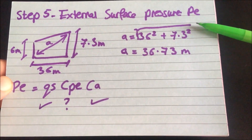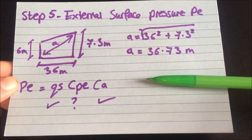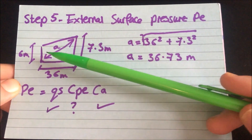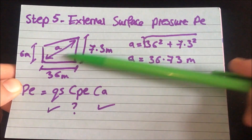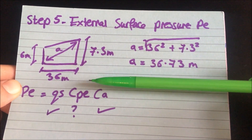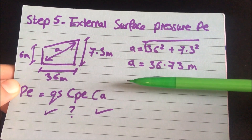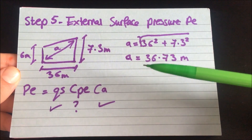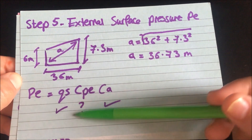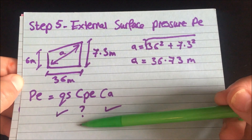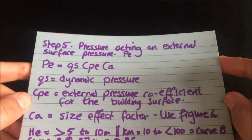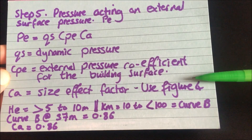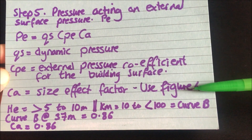Now we're on step five: we need to work out the external surface pressure. Before explaining the formula, I want to quickly note that in order to work out the external surface pressure, we need to know the diagonal length of the gable end of the portal frame. We know it's 36 meters wide and 7.3 meters in height, so using the Pythagorean theorem we get a diagonal length of 36.73 meters. The external surface pressure formula requires QS (dynamic pressure), CPE (external pressure coefficient), and CA (size effect factor), which we find from figure 4.